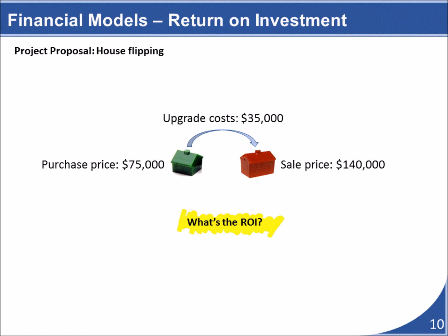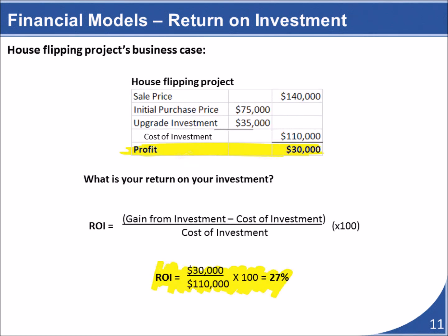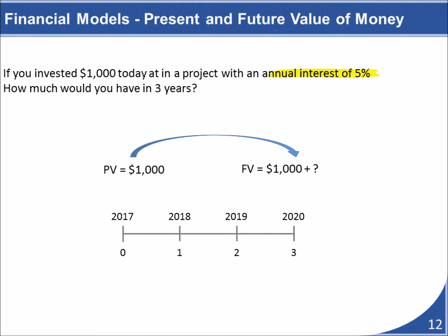In this scenario, you want to buy a $75,000 house, do about $35,000 worth of repairs and upgrades, and then sell it for $140,000. Using the return on investment formula — dividing profit by investment — we find a return of about 27% on our investment. By knowing the return on investment for several different projects, you can rank them based on which one has the higher return, allowing you to compare projects and identify the most financially advantageous.